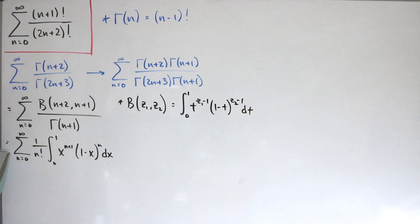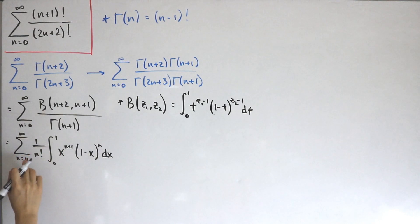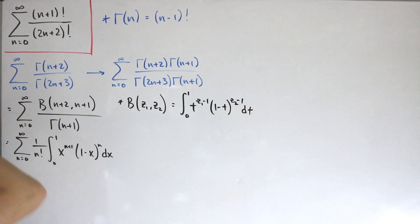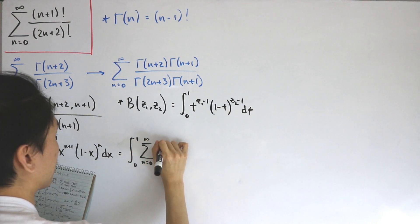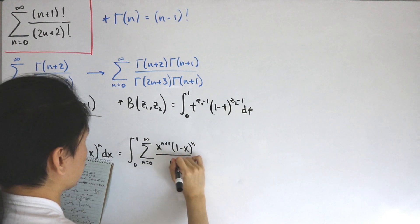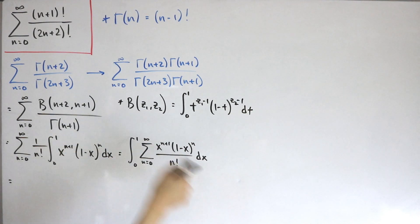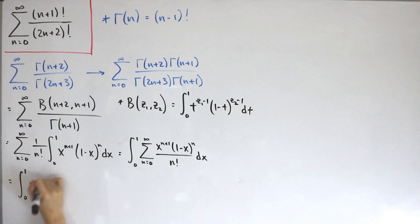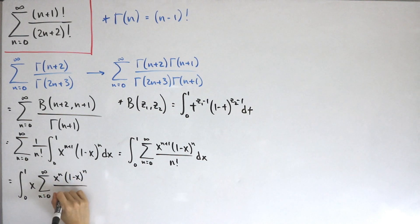By convergence, we can interchange the integral and the summation. So this becomes the integral from 0 to 1 of the sum from n=0 of x^(n+1)·(1-x)^n / n! dx. Factoring out one x from x^(n+1), we get the integral from 0 to 1 of x times the sum from n=0 of x^n·(1-x)^n / n! dx.